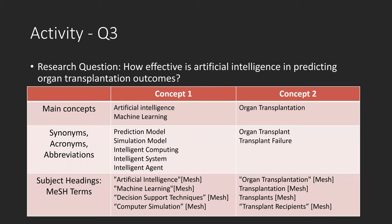Here is an example of how to translate a research question into its relevant search concepts. We have a research question: how effective is artificial intelligence in predicting organ transplantation outcomes? We come up with two concepts: one is artificial intelligence, the other is organ transplantation. Under the main concepts, we also need to collect terms like synonyms, acronyms, and abbreviations relevant to these two main concepts. We should also consider using subject headings — the examples here are MeSH terms, which are subject headings used in PubMed.